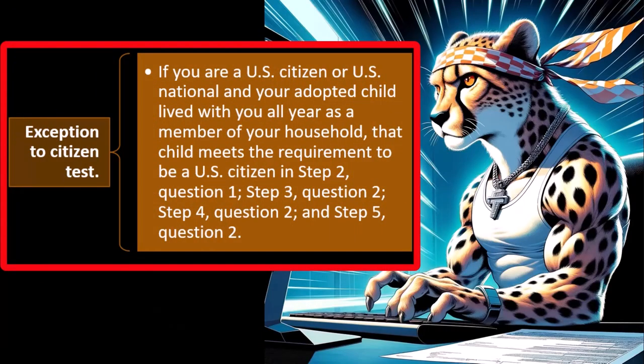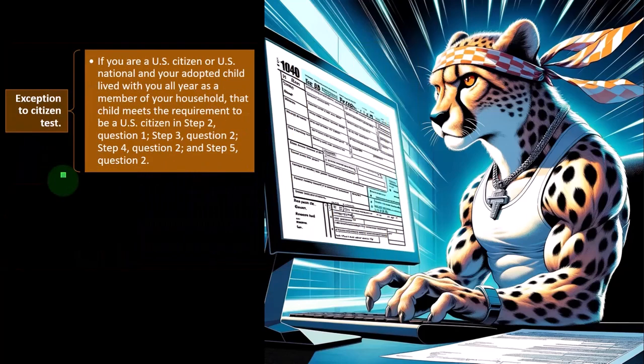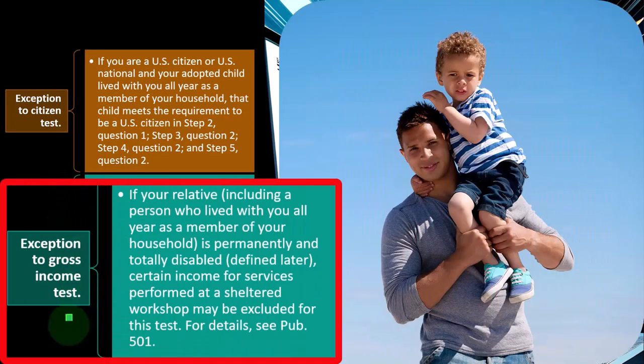Exception to the citizen test. We saw that there was a citizen test, and that's another area where you could find great points for further research. So if you are a US citizen or a US national, and your adopted child lived with you all year as a member of your household, that child meets the requirement to be a US citizen in step two question one, step three question two, step four question two, and step five question two — which are all basically the same questions in our questionnaire from a prior presentation.